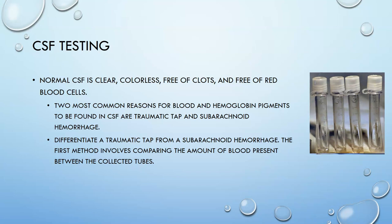To differentiate between a traumatic tap and a subarachnoid hemorrhage, the first method is simply looking at the amount of blood across all collected tubes — tubes one, two, three, and four, with one being the first collected and four being the last. If it is a traumatic tap, there will be more blood in tube one and progressively less, hopefully none in tubes three and four. If it is a subarachnoid hemorrhage, you would expect an equal amount of blood in all four tubes.